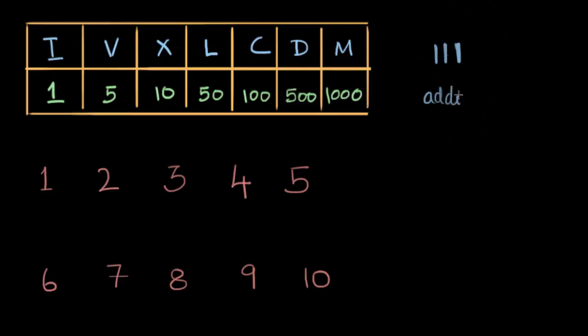And this is called the additive way of writing things. I just add what's there individually because I know this I-like thing stands for one. And then I add I, I, I, three I's, which is just three. So Roman numerals follow this idea of additive representation of numbers.